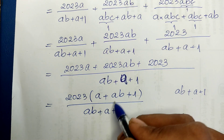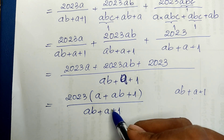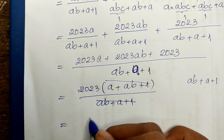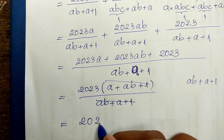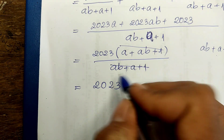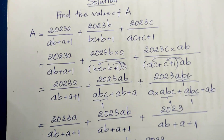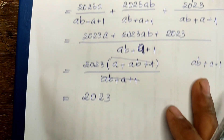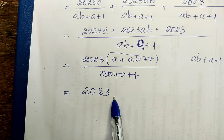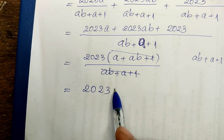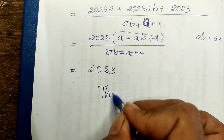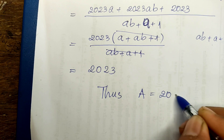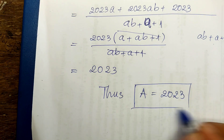We can simplify this — the numerator and denominator are identical, so the fraction equals 1. Therefore the full expression equals 2023 times 1, which is 2023. The value of A is equal to 2023. That is our solution.